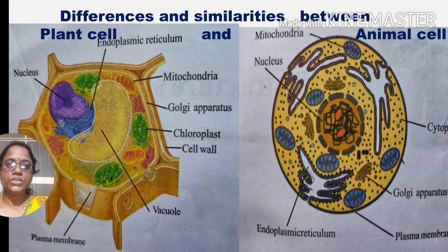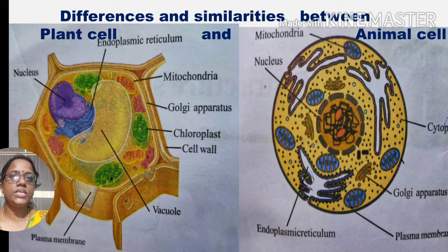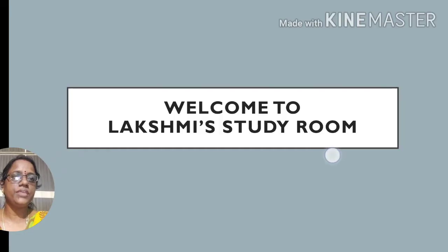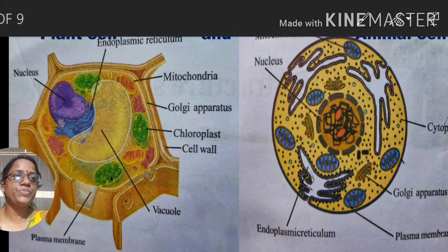These are two diagrams given in your textbook. The first one is a plant cell and the second one is an animal cell.